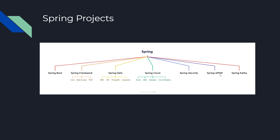Spring AMQP is related to message queues — RabbitMQ is the default implementation. Spring Kafka is a project focused on integration with Kafka; if we are writing a Java application that has something to do with Kafka, we can use Spring Kafka. There are many more Spring projects, and you get the idea — they all focus on different problem domains but follow the core ideology of Spring.